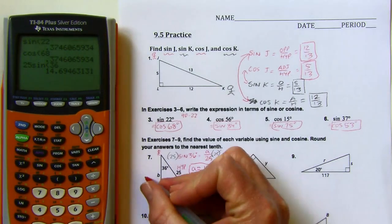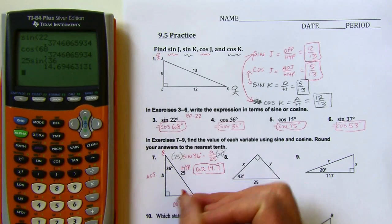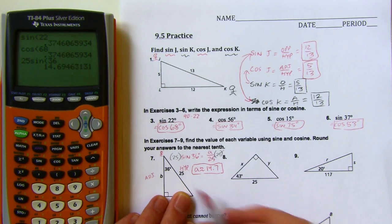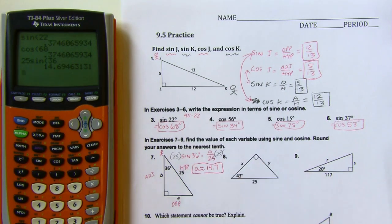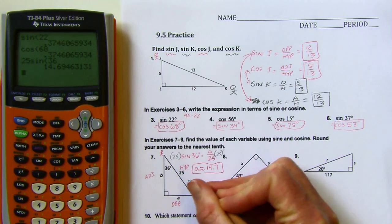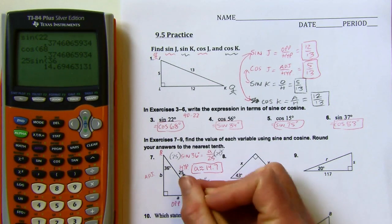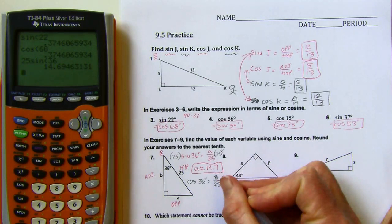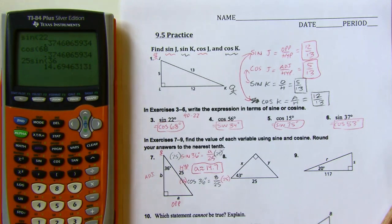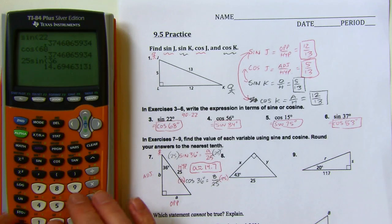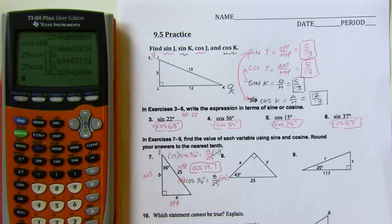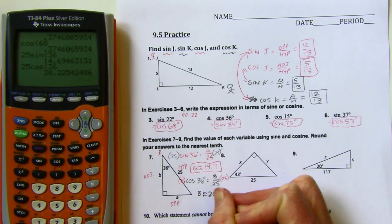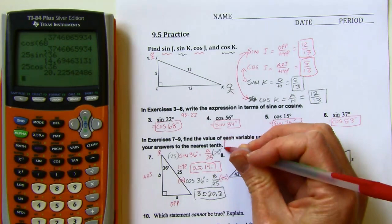Okay, and then if I'm going for b, then I'd want to use the adjacent and the hypotenuse, right? Even though we know what this is, just in case I made a mistake on a, I'll use the b and the 25. So adjacent and hypotenuse, that would be cosine. So I'm going to do cosine of 36 degrees is going to equal b over 25. And then I'll multiply by 25 on both sides. So b will equal 25 cosine 36 degrees, which is about 20.2.